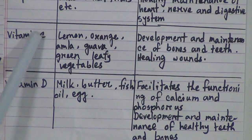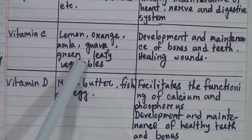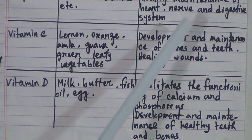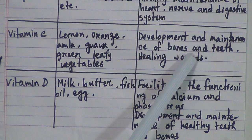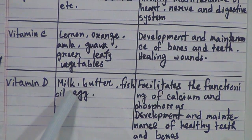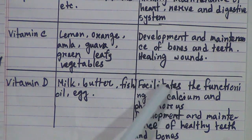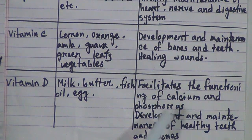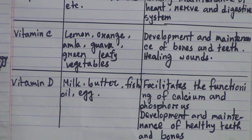Vitamin C sources: lemon, orange, amla, guava, and green leafy vegetables. Functions of vitamin C: development and maintenance of bones and teeth, and healing wounds. Vitamin D sources: milk, butter, fish oil, and egg. Functions of vitamin D: facilitates the functioning of calcium and phosphorus, and development and maintenance of healthy teeth and bones.